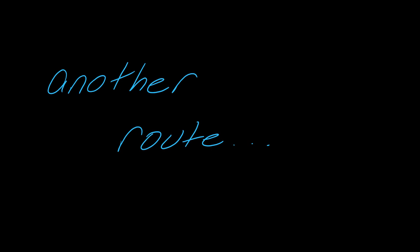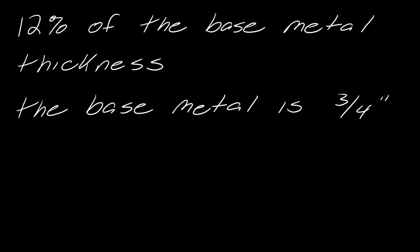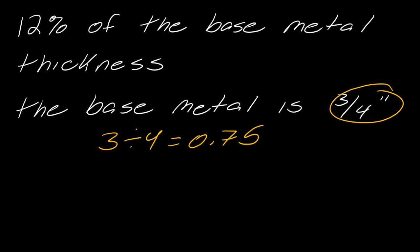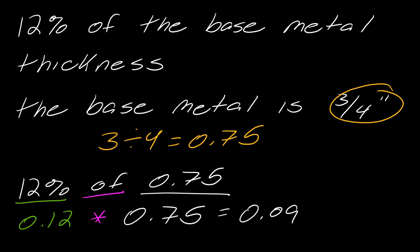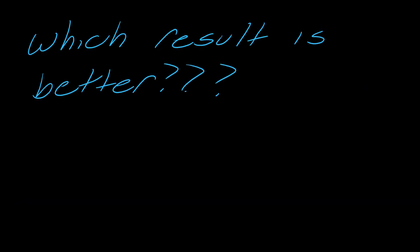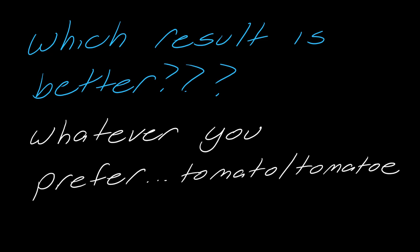Another route: convert three-fourths to a decimal first — 3 divided by 4 equals 0.75 — and redo the calculation as 12% of 0.75: 0.12 times 0.75, which gives the same answer. Either route gives the same result, so go with whichever you prefer.